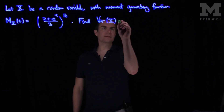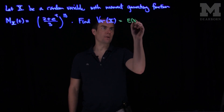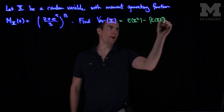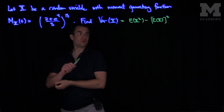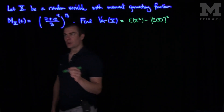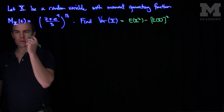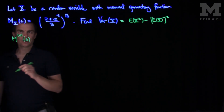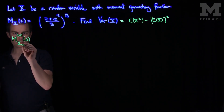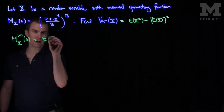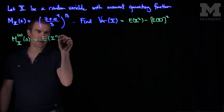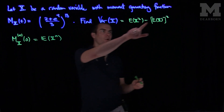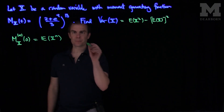If we recall that the variance of x is the expected value of x squared minus the expected value of x quantity squared, we can use the moment generating function to find each of these moments. Recall that the nth derivative of the moment generating function at the origin is the expected value of the random variable x to the power n. So if we need to find the second moment and the first moment, we can find the first and second derivatives.